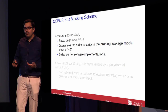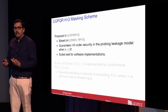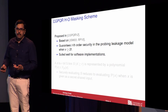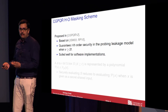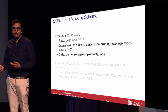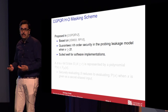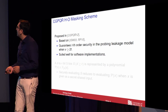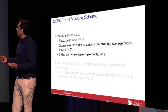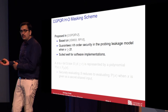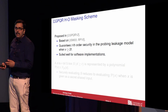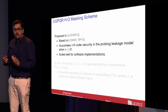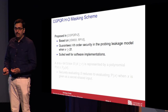One class of countermeasures is the one proposed by Carlin and others from FSE 2012, which in turn is based on the seminal work of Ishai, Sahai, and Wagner from Crypto 2003 and its extension by Riva and Proof from 2010. This scheme provides formal security guarantees in the probing leakage model and it's well-suited for software implementations.